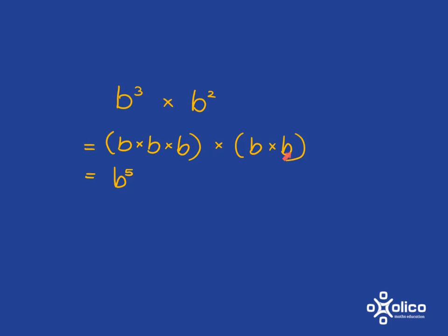What does that come to altogether? Well, you see, you've now got one, two, three, four, five b's all multiplied together.